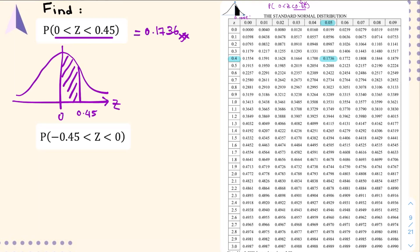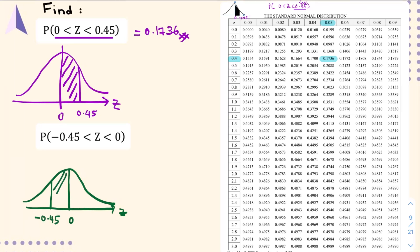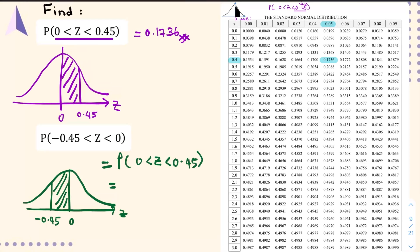If the question asks about the negative part, again sketch the graph first. Here Z is from negative 0.45 to 0, so the shaded region is this part. You must remember that the standard normal distribution curve is symmetrical about the mean. So if the question asks about the negative part, change it to the symmetrical positive part. P(Z between -0.45 and 0) equals P(Z between 0 and 0.45), giving the same answer: 0.1736.